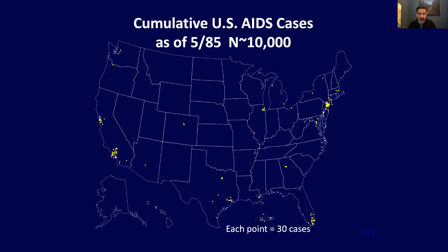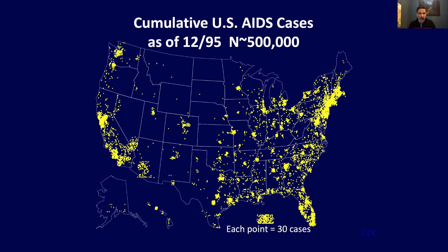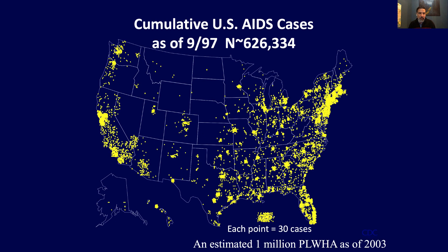Going back to the map, advancing a little bit forward in time: as of 1985 there were about 10,000 cases around the U.S. By 1989, 100,000 cases around the U.S. And by 1995, 500,000 cases, with much more geographic spread. By 1997, there were about 626,000 AIDS cases diagnosed around the U.S. And by 2003, there were estimated to be about a million cases of AIDS in the U.S.